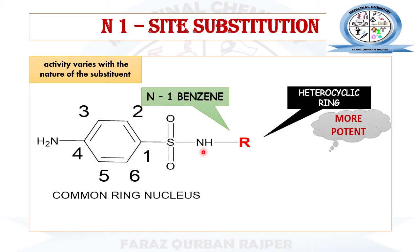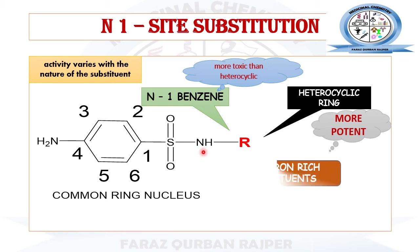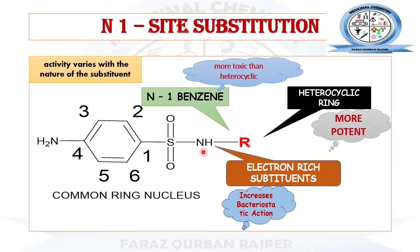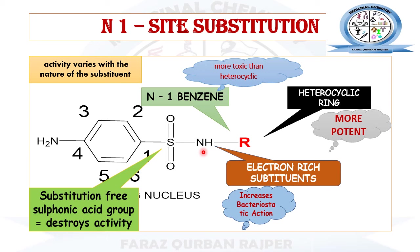In comparison to heterocyclic rings, if the N1 position is substituted with benzene, those sulfonamide derivatives will have more toxic properties. Electron-withdrawing substituents at the N1 position produce derivatives with good bacteriostatic action, meaning enhanced antibacterial properties. Substitution of the free sulfonyl functional group with a hydroxyl group converts it to a sulfonic acid, which destroys antibacterial activity entirely.